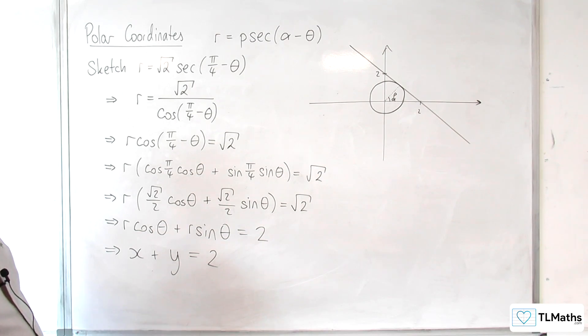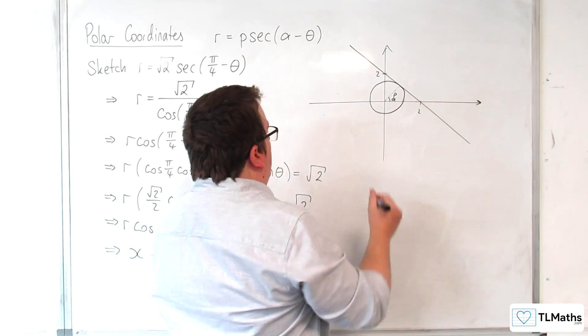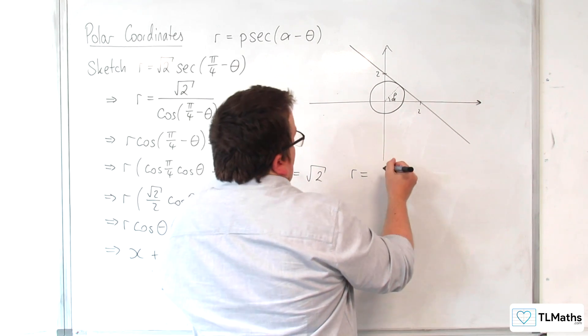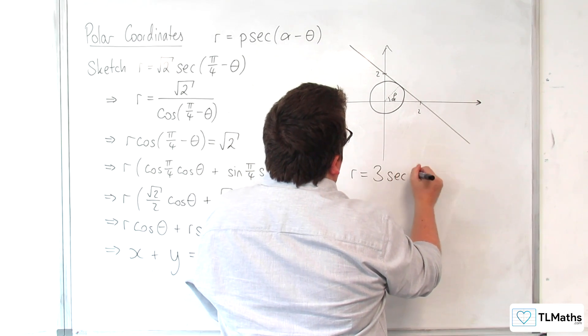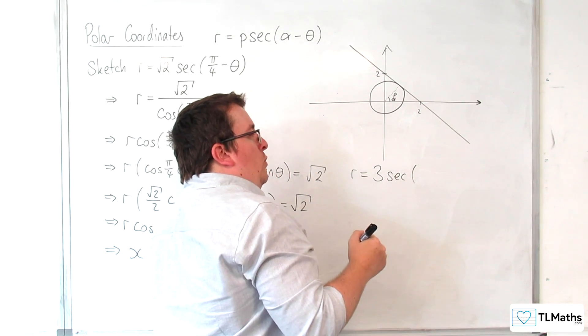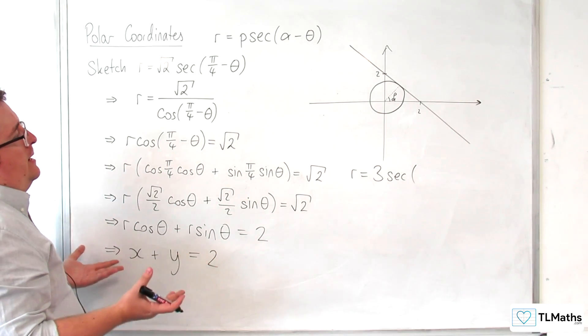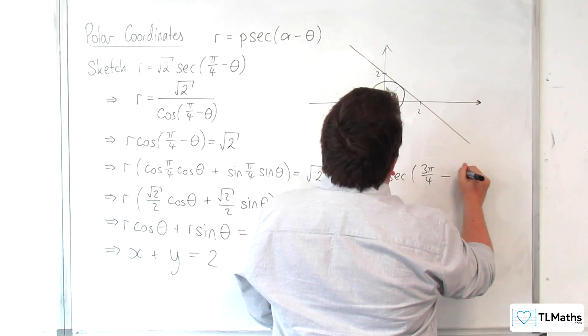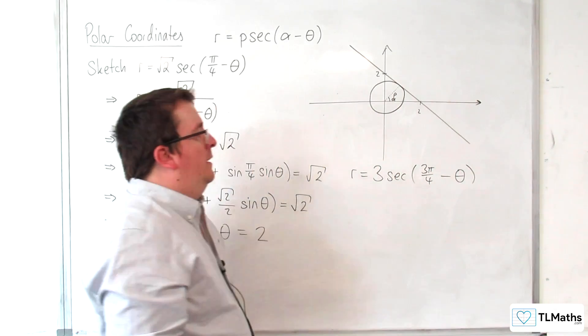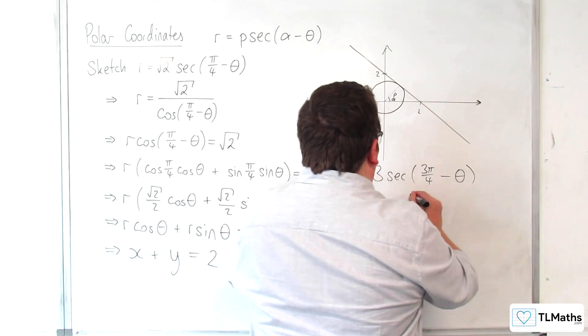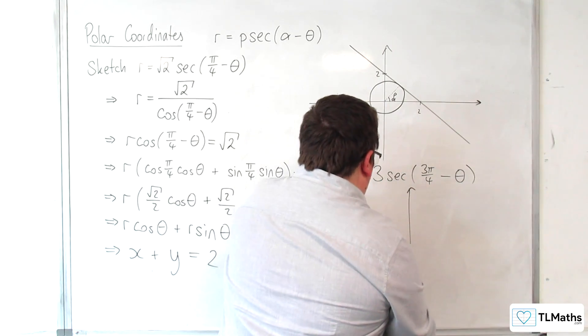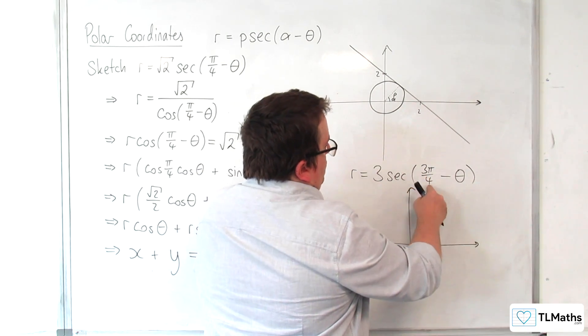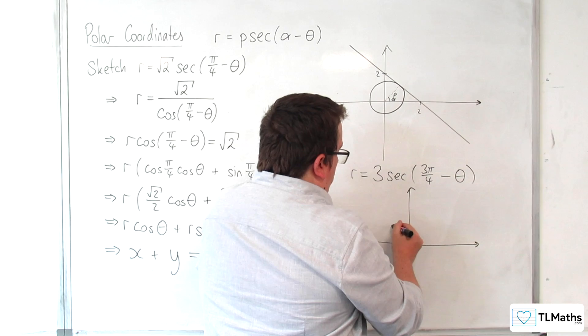So in fact, if instead I had been given r equals, let's say, 3 sec of 3 pi over 4 take away theta, let's say I had that. What would that look like? Well, the first thing is that I know it's of distance 3 from the pole. And 3 pi over 4 is round here.